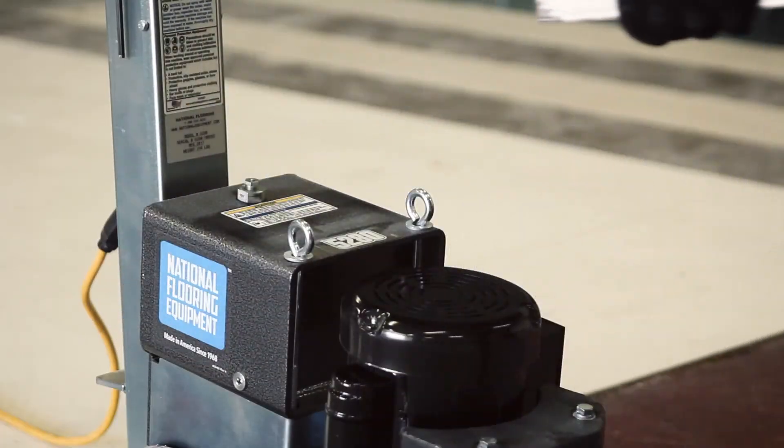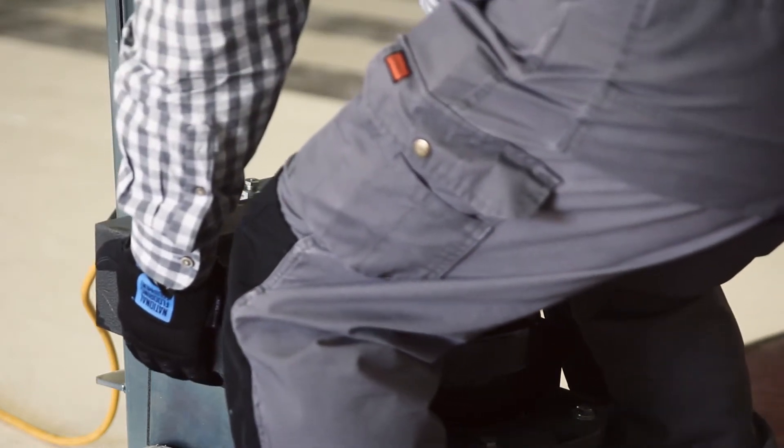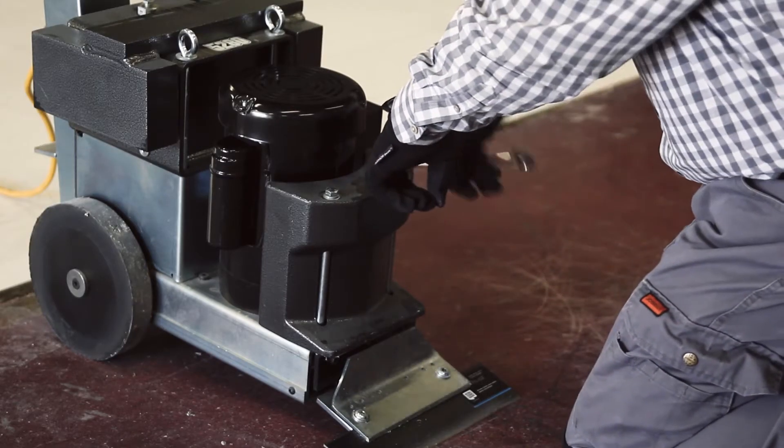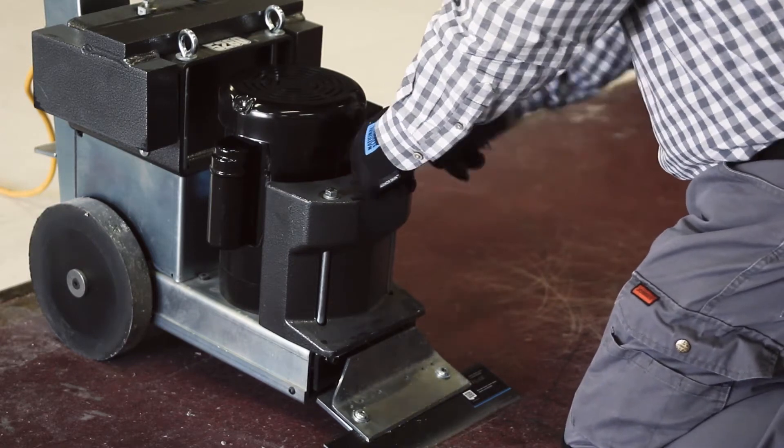The top weight is removable to decrease overall weight, making the machine easier to transport. The 49 pound front weight can also be removed to increase or decrease head pressure and traction when appropriate.